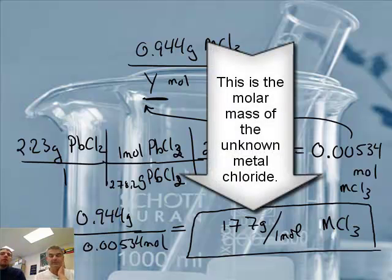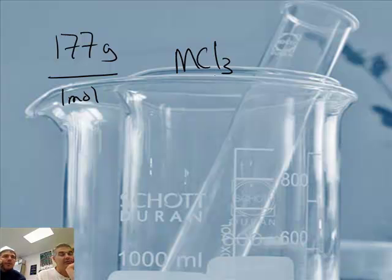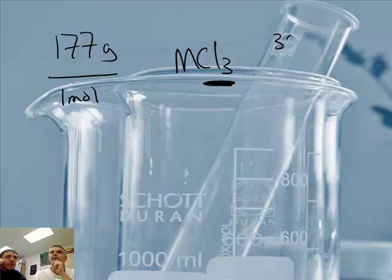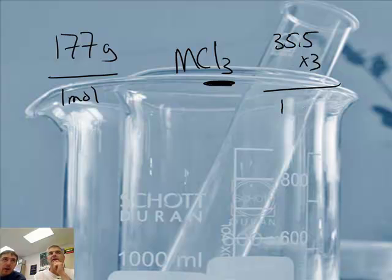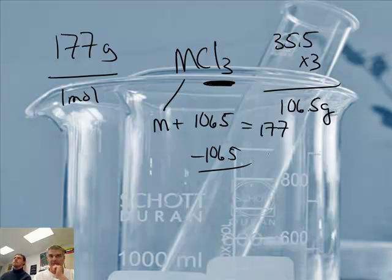Now we're still not done, Mr. Seamus. No, because that's the metal chloride. We want the identity of the metal. So I'm going to recopy it here. And this is MCl₃. So that's the total mass of that formula. We need to subtract out the mass of the chlorine, and that will leave us with the mass of the metal. Well, chlorine weighs 35.5. And there are three of them, and that would add up to 106.5 grams. So if this consists of some metal, M, plus 106.5, and that adds up to 177, well, we could subtract 106.5 from both sides. And we get 70.5.